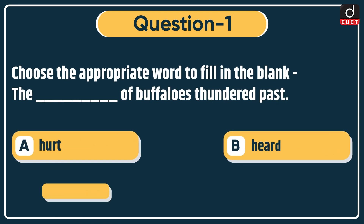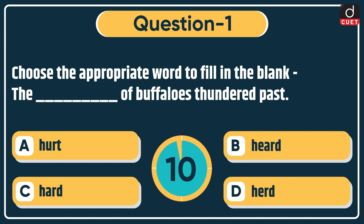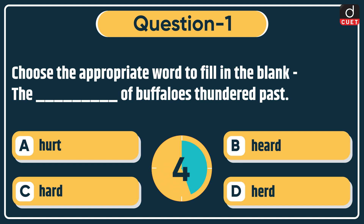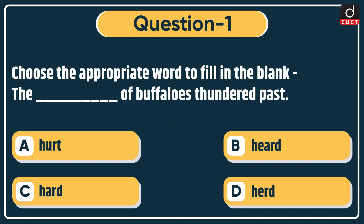First question: choose the appropriate word to fill in the blank. 'The dash of buffaloes thundered past.' Options: herd, hurt, hard, or herd. The correct answer is option D: herd.